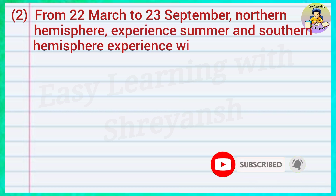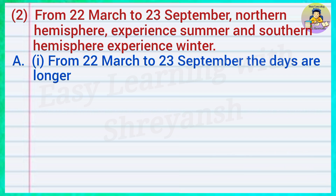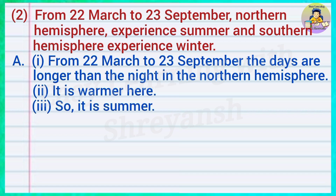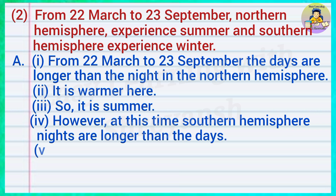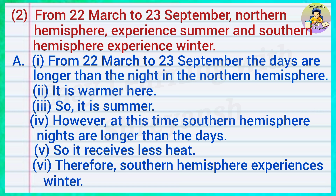Two: From 22nd March to 23rd September, the northern hemisphere experiences summer and the southern hemisphere experiences winter. Answer: From 22nd March to 23rd September, the days are longer than the nights in the northern hemisphere; it is warmer here, so it is summer. However, at this time in the southern hemisphere, nights are longer than the day, so it receives less heat; therefore the southern hemisphere experiences winter.